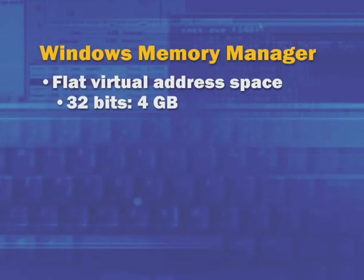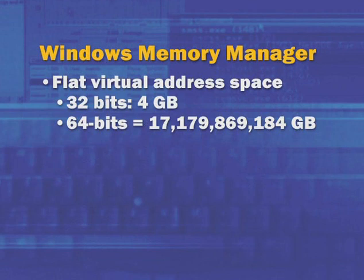On 32-bit Windows, 2 to the 32 is 4 gigabytes, or about 4 billion bytes. For a 64-bit system, a 64-bit address space provides 17 billion gigabytes. A much smaller portion of that 17 billion is currently accessible by 64-bit architectures, and even a little bit less than that is available to Windows because of some implementation details of the current 64-bit version.